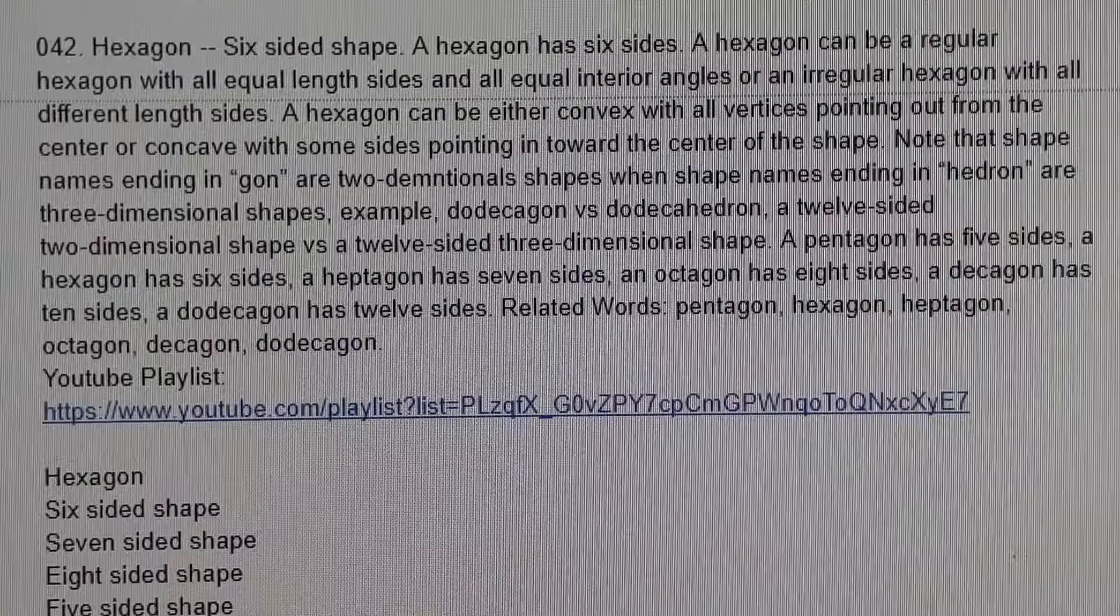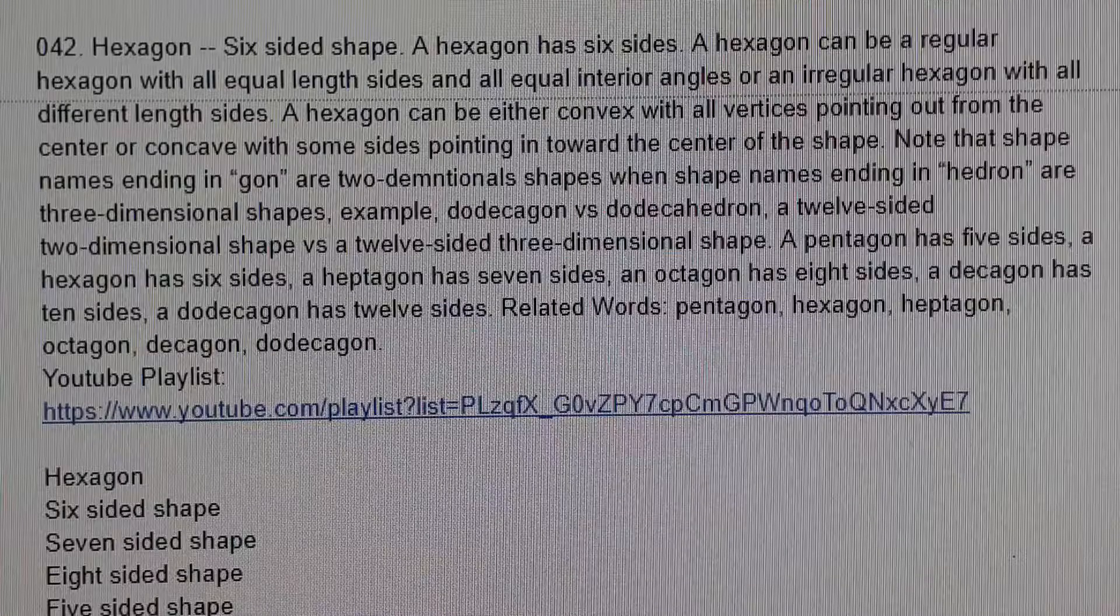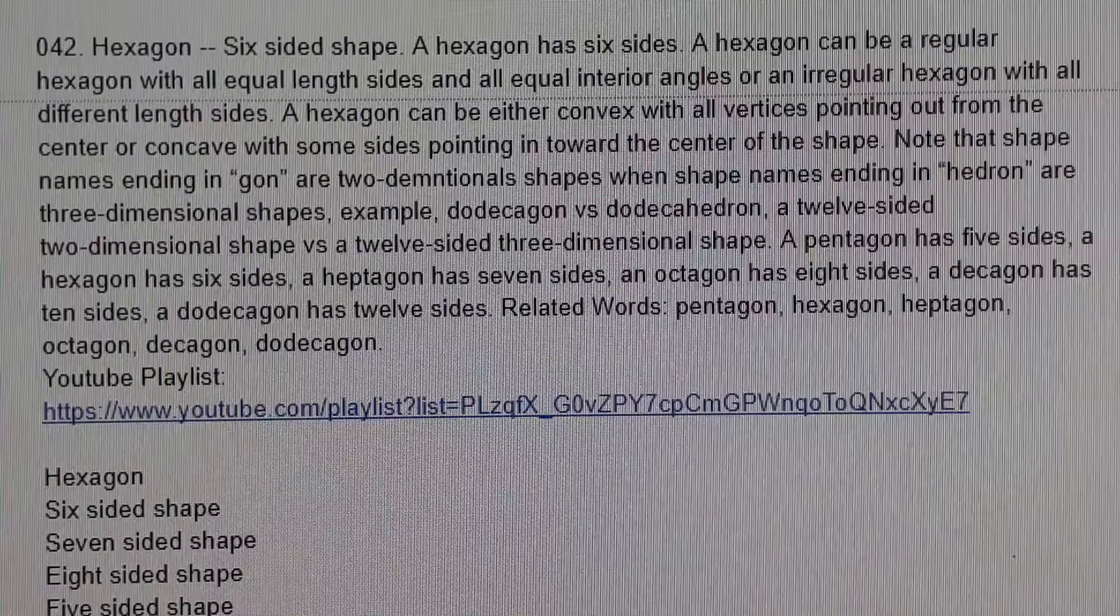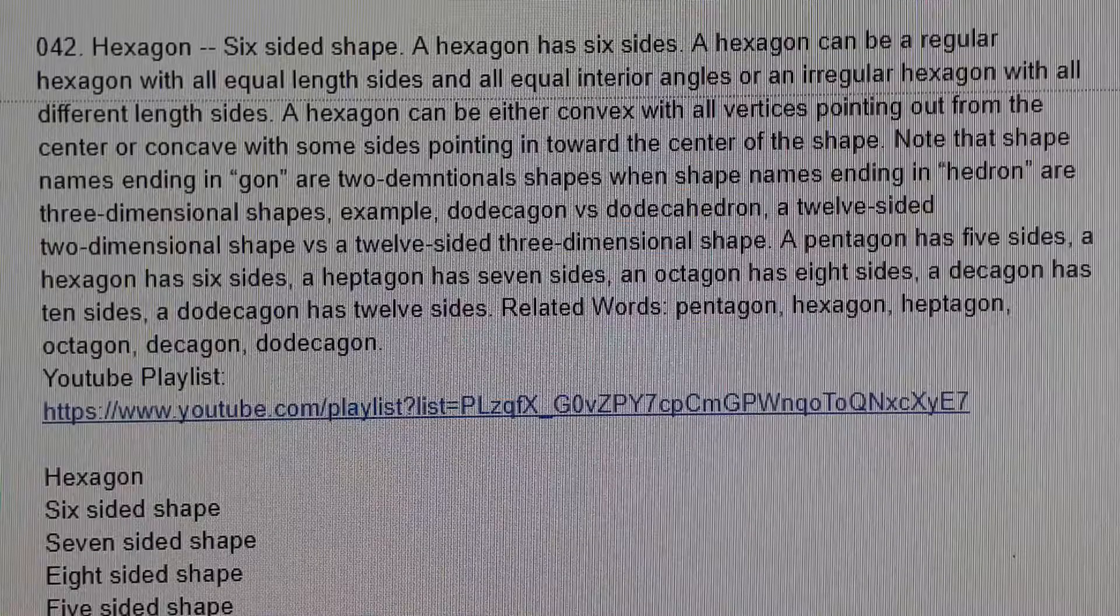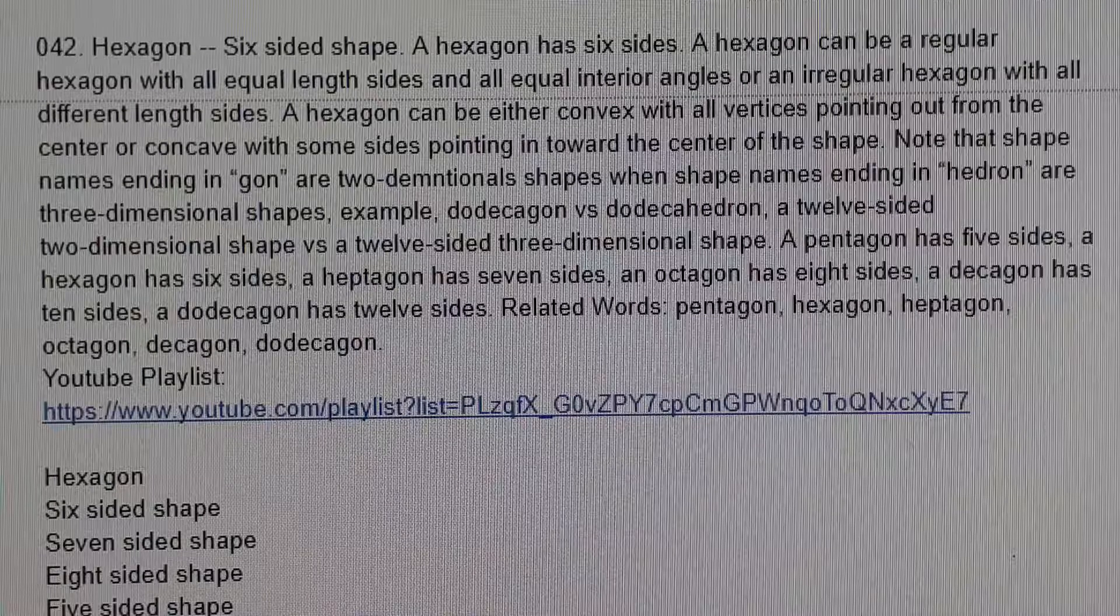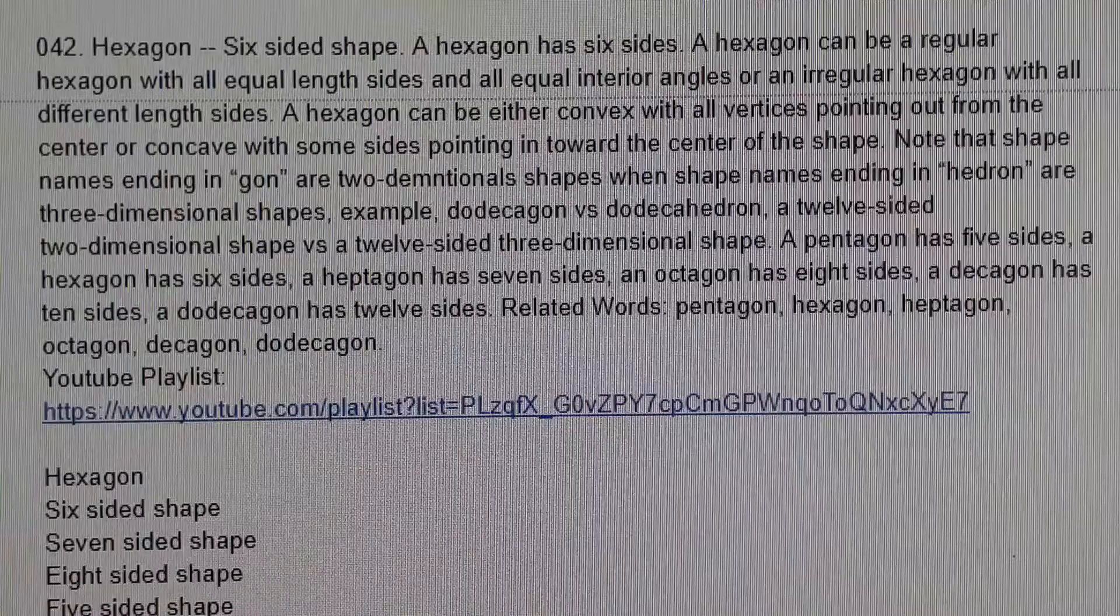A pentagon has five sides, a hexagon has six sides, a heptagon has seven sides, an octagon has eight sides, a decagon has ten sides, and a dodecagon has twelve sides.